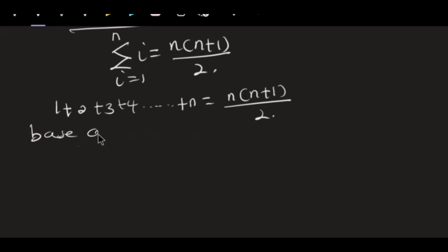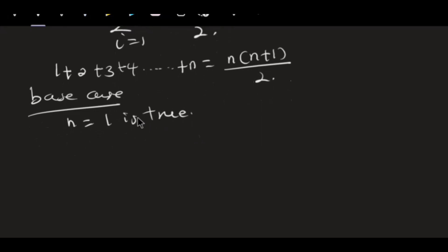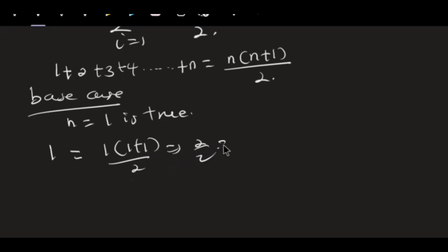We have to prove that this is equal for all natural numbers — when you sum one, two, three up to any n, it is given by n times n plus one all over two. For the base case we prove that n equals one is true. When I sum the first term, one on the left side equals one times one plus one all over two, which gives two over two, which is also one. One equals one, so our base case is true.